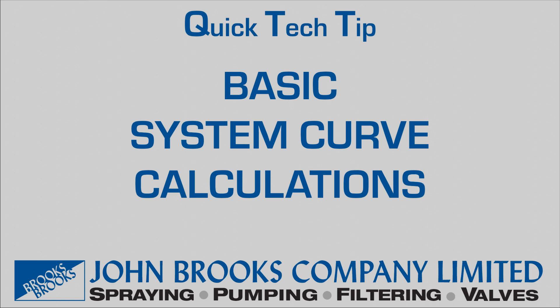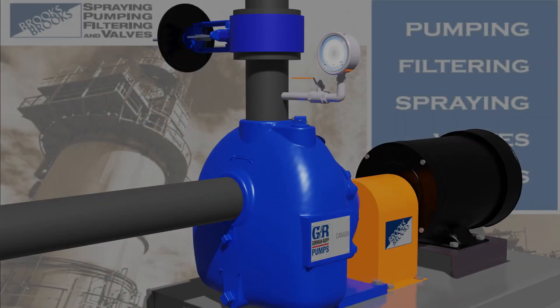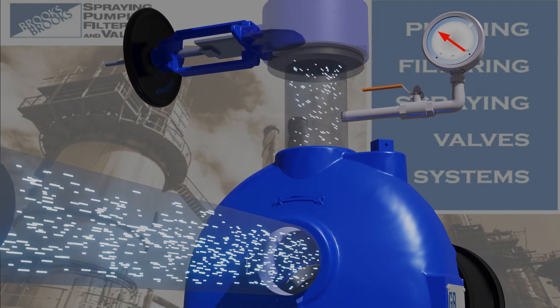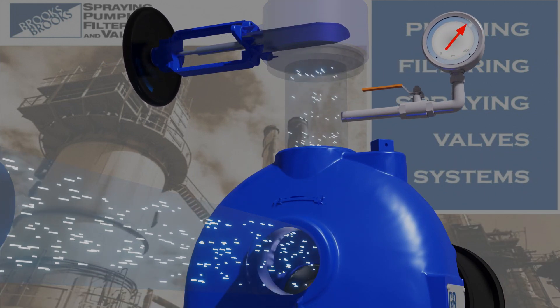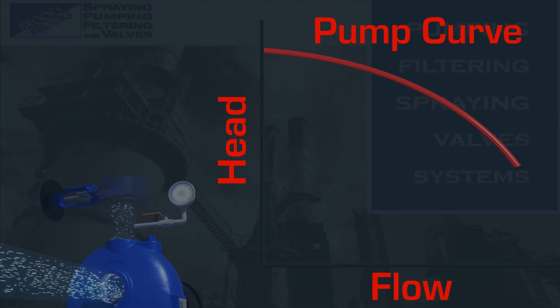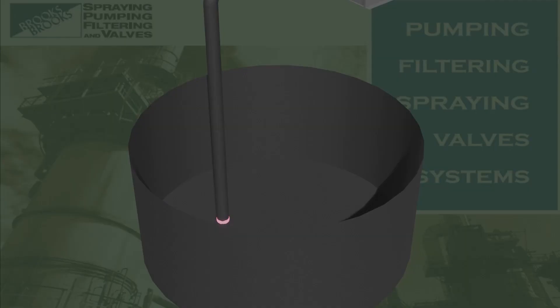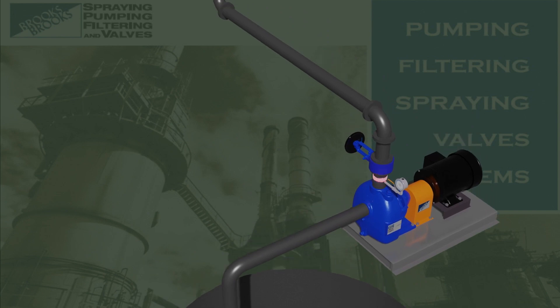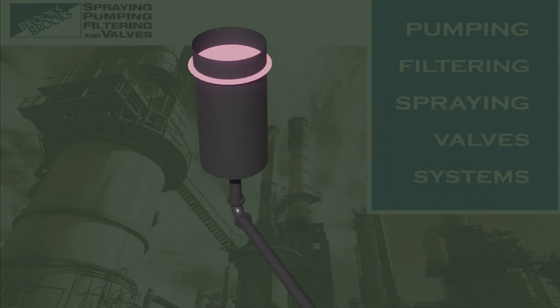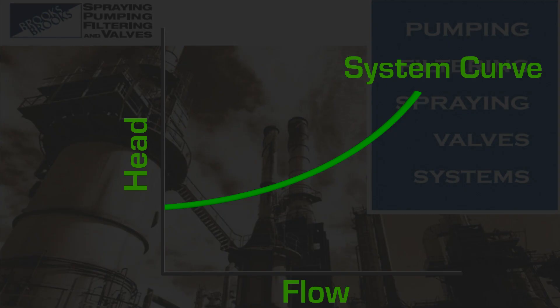Quick tech tip: basic system curve calculations by the John Brooks Company. All pumps have some kind of relationship between their ability to develop flow and the pressure or head that has to be overcome. This relationship, better known as a pump curve, does not by itself tell us what the pump will actually do. In order to predict the pump's operating point, we must first know about the piping system the pump is connected to. Calculating the total pressure drop in a piping system at varying flow rates will give us a system resistance curve.